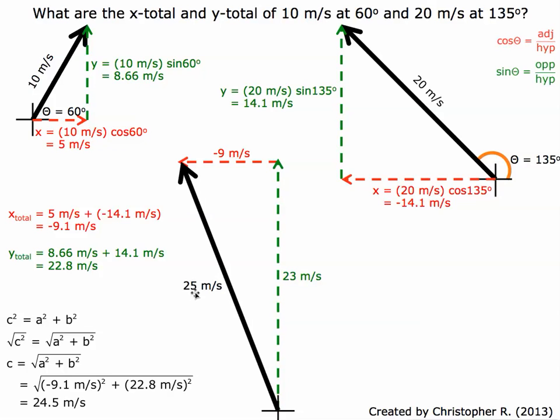If we draw that in, I put 25 meters per second here because of significant figures. We've got two sig figs here, two, two, and three. Our lowest is two, so that's why I have two sig figs. Now the next thing to do is to calculate this angle.